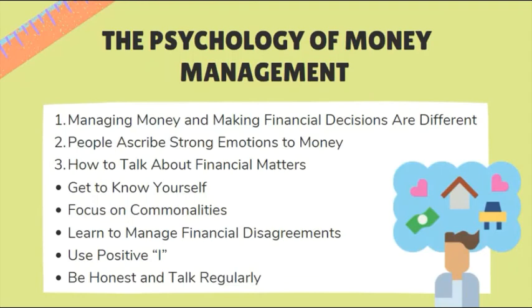For dual-earning couples, this can be accomplished by setting up three checking accounts: a recreational account for each individual and a joint account. Clearly specify the budget categories for each account so each partner feels they have access to money the other does not control, encouraging independence and self-control. Decision-making is where disagreements typically arise, so shared decision-making is best when setting goals, making major purchases, and conferring on insurance, estate planning, and long-term financial plans.